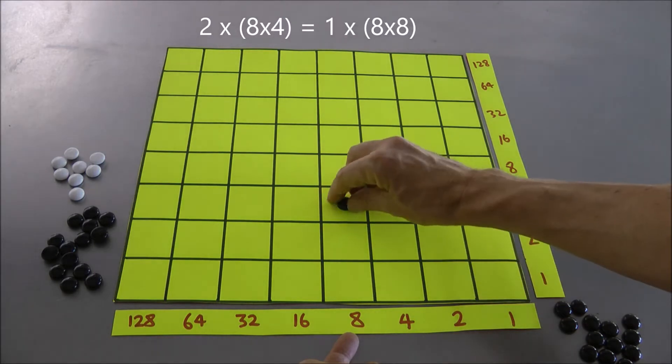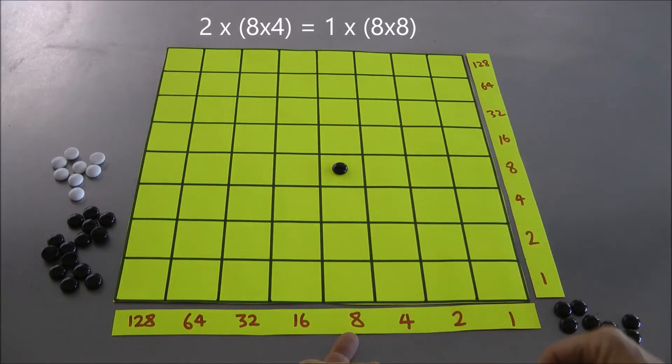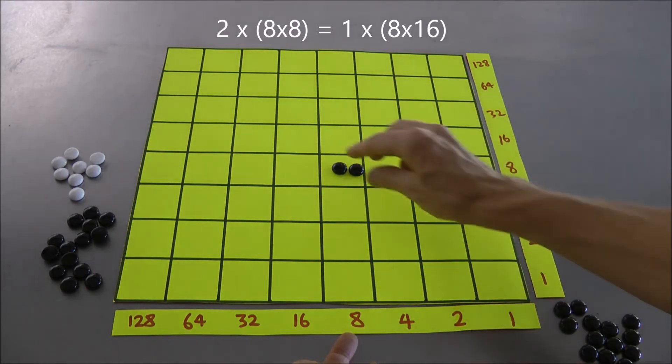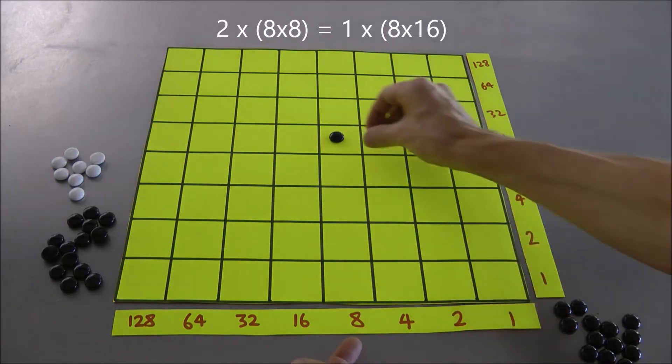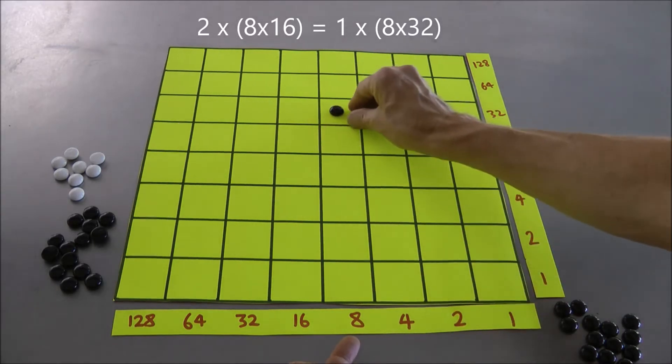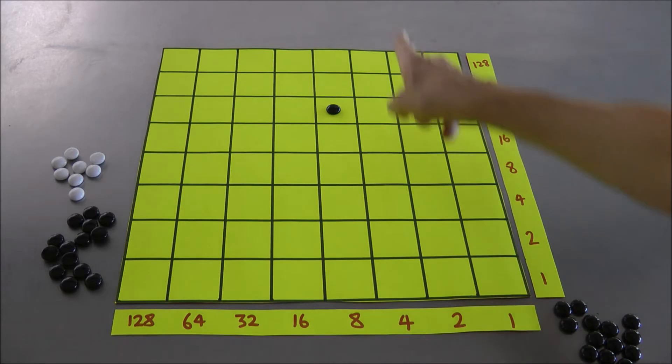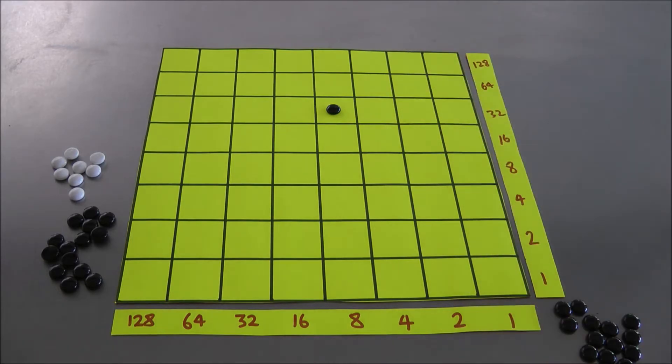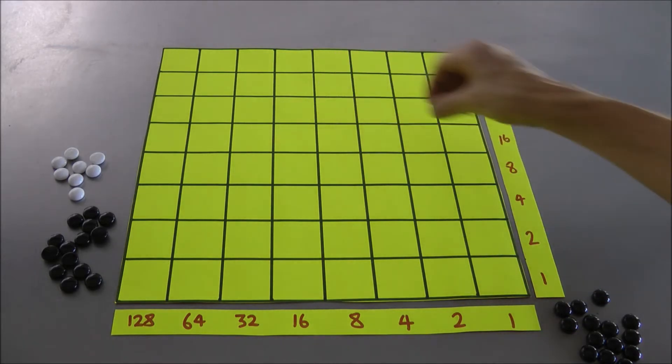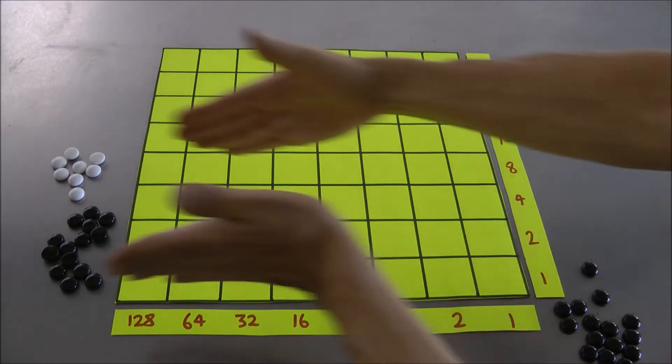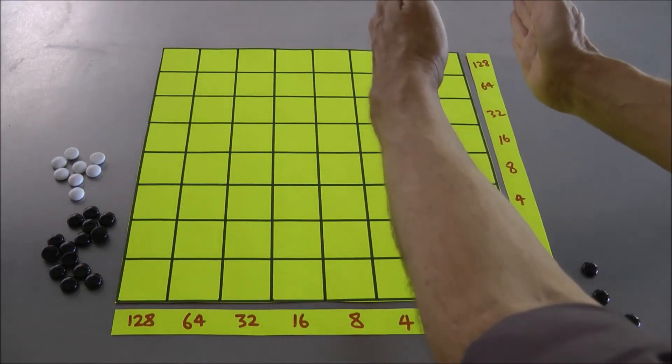2 8x4's is indeed the same as 1 8x8. Or 2 8x8's is the same as 1 8x16. Or 2 8x16's is the same as 1 8x32. We have the 2-1 machine working vertically. Brilliant! So now we've got lots of freedom. We've got 2-1 machines working horizontally and 2-1 machines working vertically.